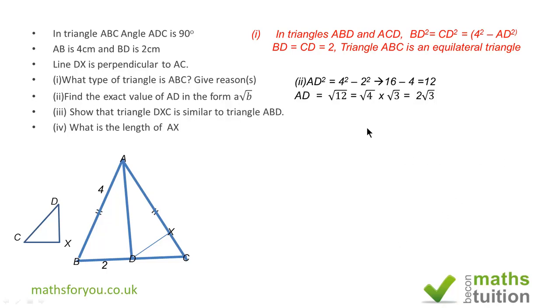Now AD itself will be √12. Now 4 and 3 are one of the factor pairs of 12. So √4 is 2, so AD will be 2√3.